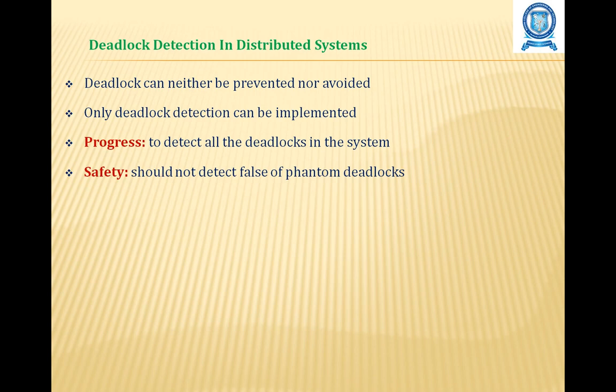Deadlocks are a fundamental problem in distributed systems and deadlock detection has received considerable attention in the past. In distributed systems, a process may request resources in any order, which may not be known in advance, and a process can request a resource while holding others. If the allocation sequence of process resources is not controlled, deadlocks can occur. A deadlock is defined as a condition where a set of processes request resources held by other processes in the set. Deadlocks can be neither prevented nor avoided, so the only possibility is that deadlock detection must be implemented.